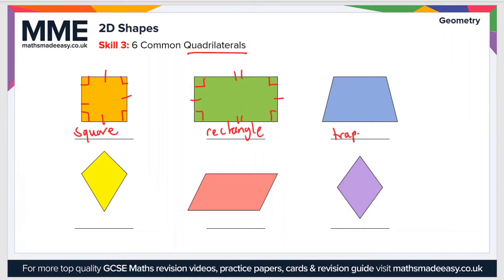Next we have a trapezium. The main feature of a trapezium is that there is one pair of parallel sides. Then in the bottom left we have a kite. The main features of a kite are two pairs of equal sides, and the opposite interior angles are equivalent.